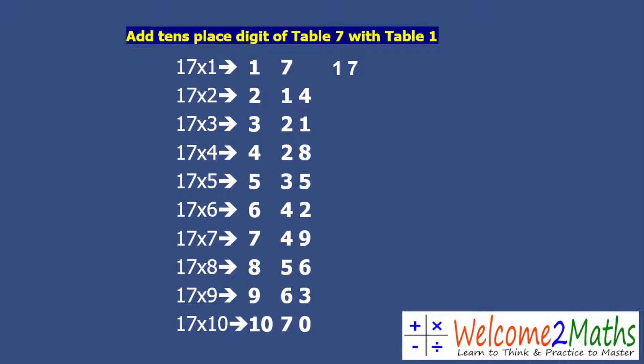The units digit of the table of 7 you write as it is. Let me show you: for 17×2, you can see 2 and 14 — the tens digit is 1, so 2 plus 1 is 3, and then you write the units digit 4 as it is. So 2 plus 1 is 3, then 4 — that gives 34. So 17 twos are 34.